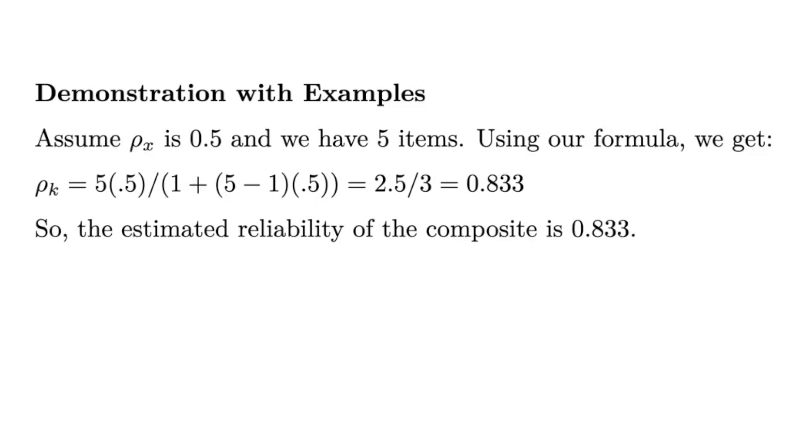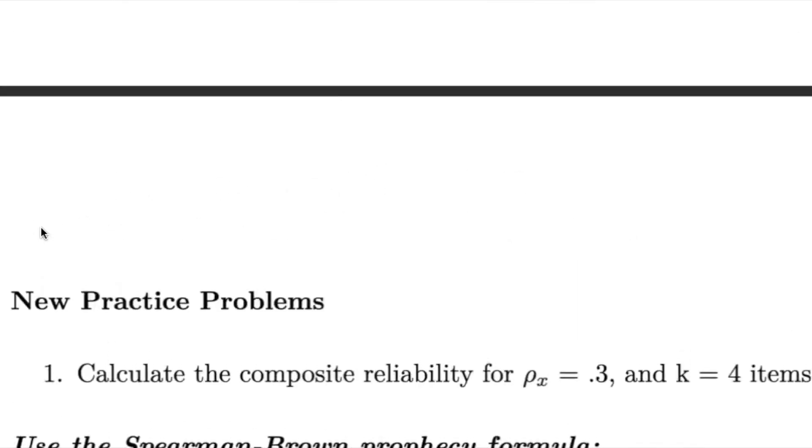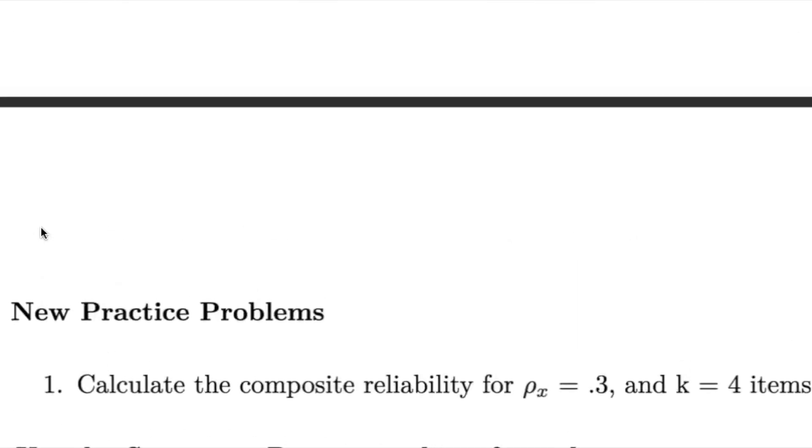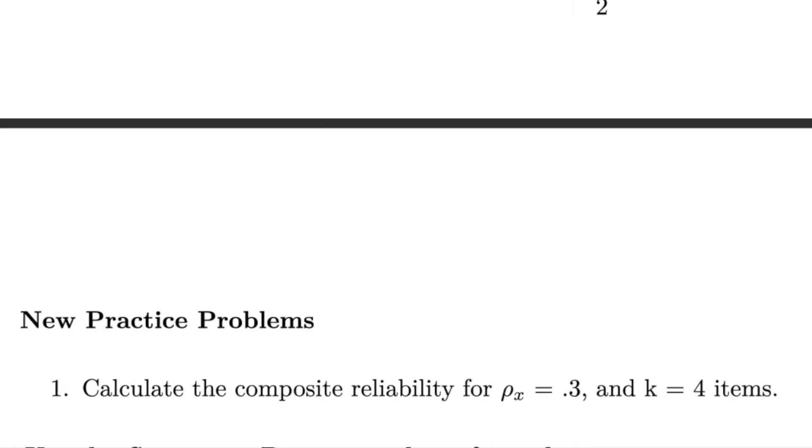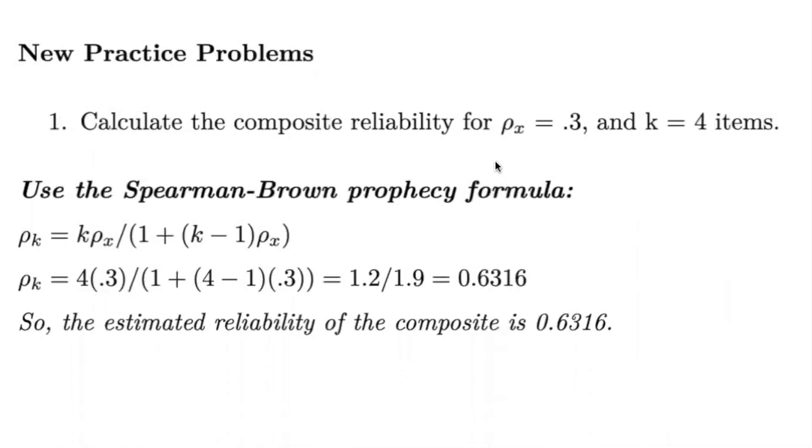This is a key insight when designing tests or surveys. Now I want to apply this formula to some practice problems. Let's calculate the composite reliability for ρₓ equals 0.3 and k equals four items. Using our formula, the composite reliability comes out to be approximately 0.6316. Although each individual item is only 30% reliable, when we combine four such items, we get a more reliable measure, which is about 63.16%.